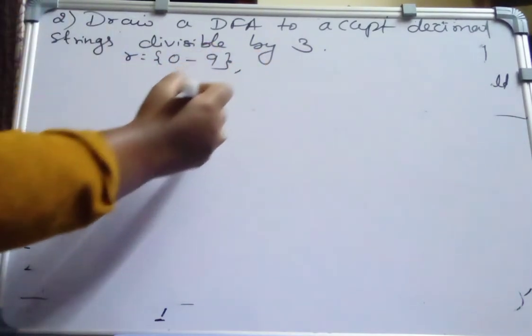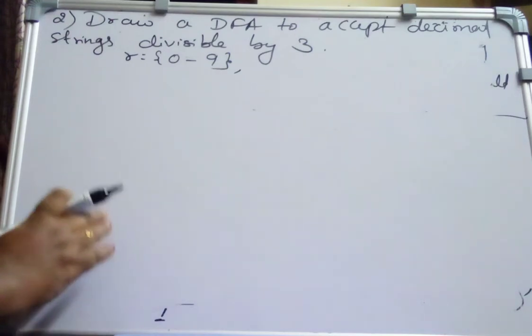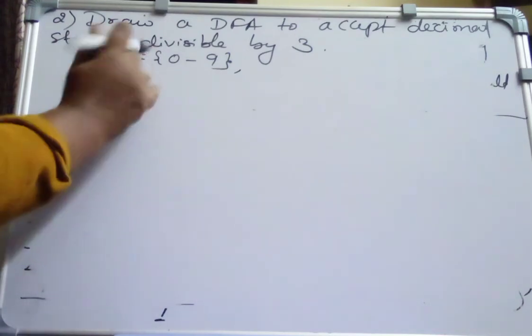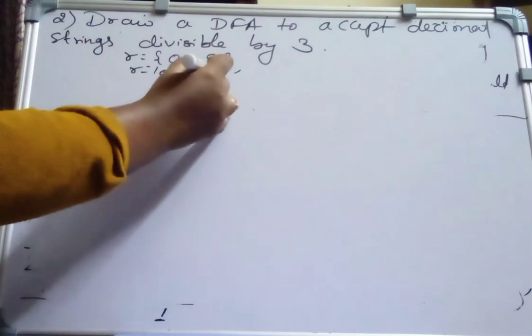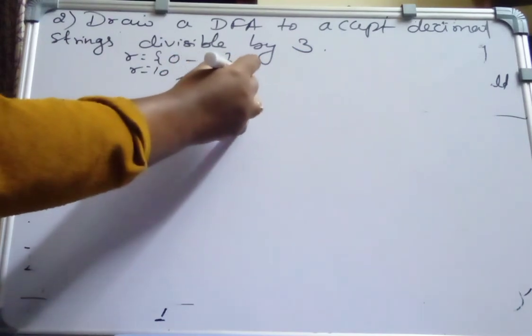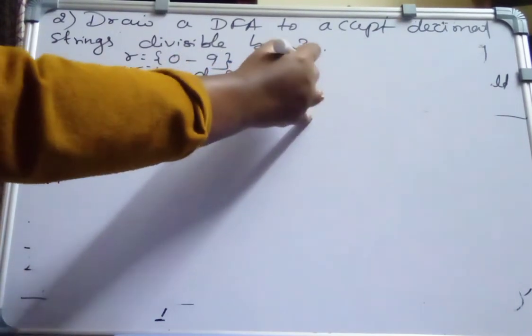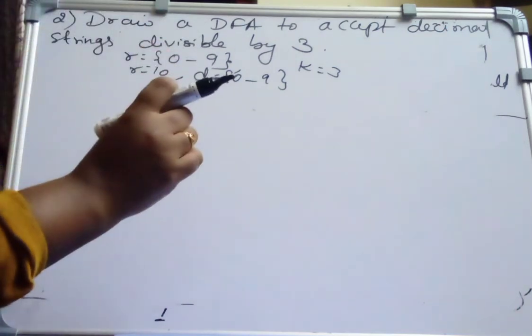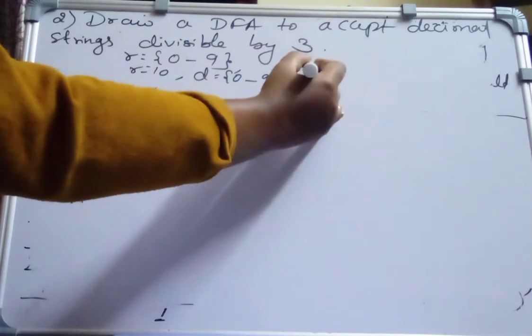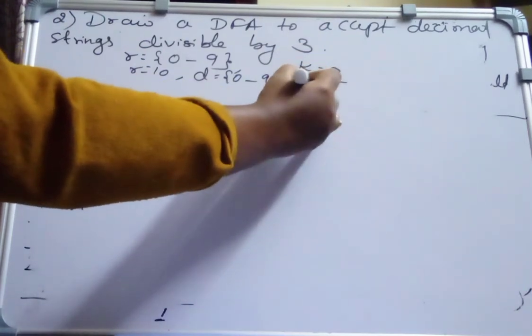Then what is my D here? D can be digits from 0 to 9. So radix is from 0 to 9, we have 10. And digits are from 0 to 9. And what is my K? K is 3. So to draw the DFA for this, what I do? To find the transition from one state to another state, I will take the possible reminders of K.